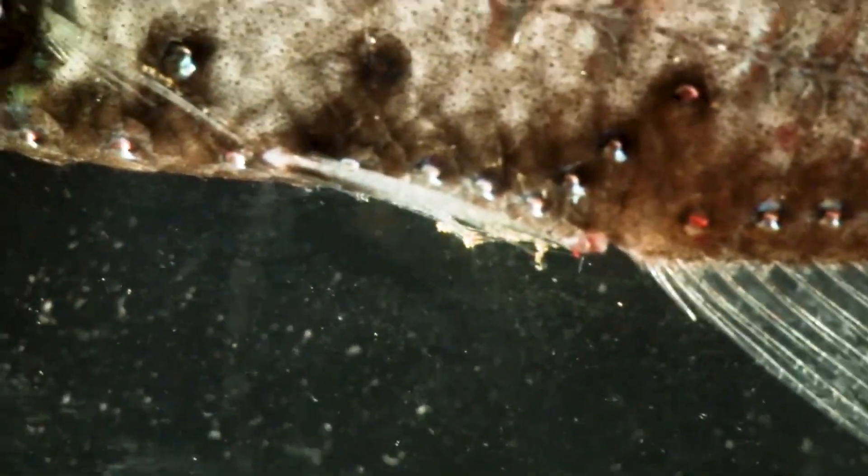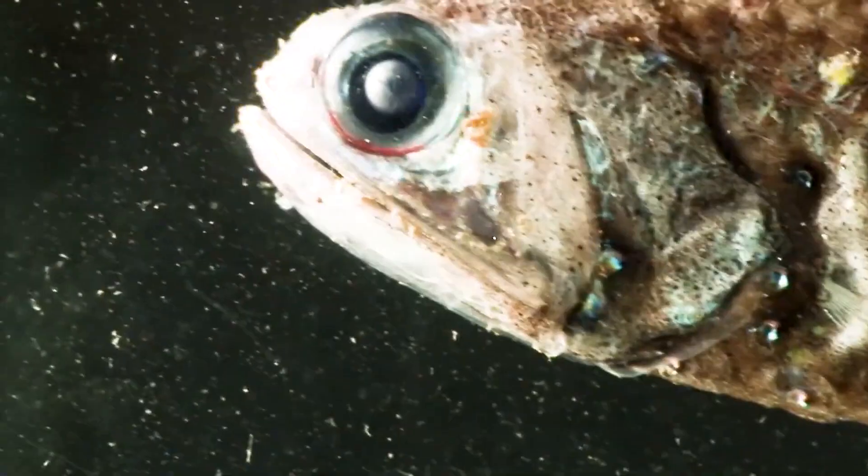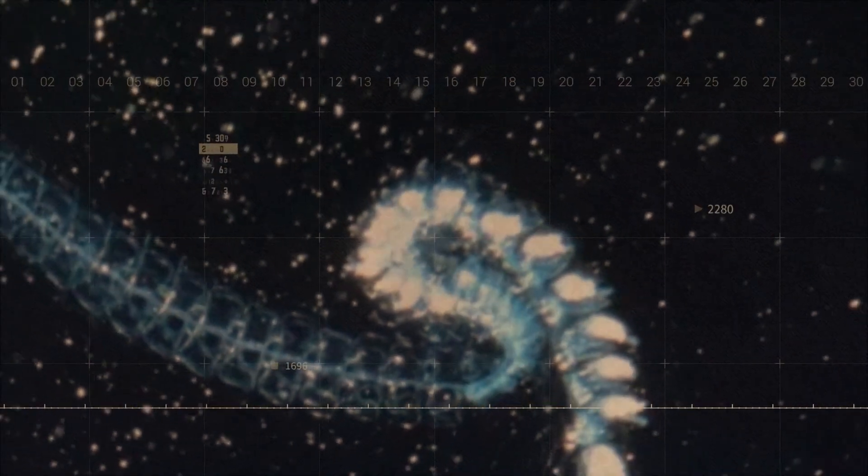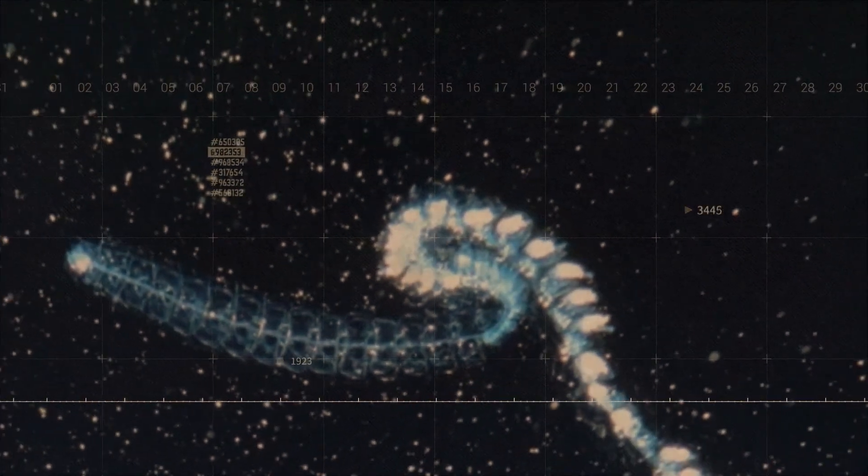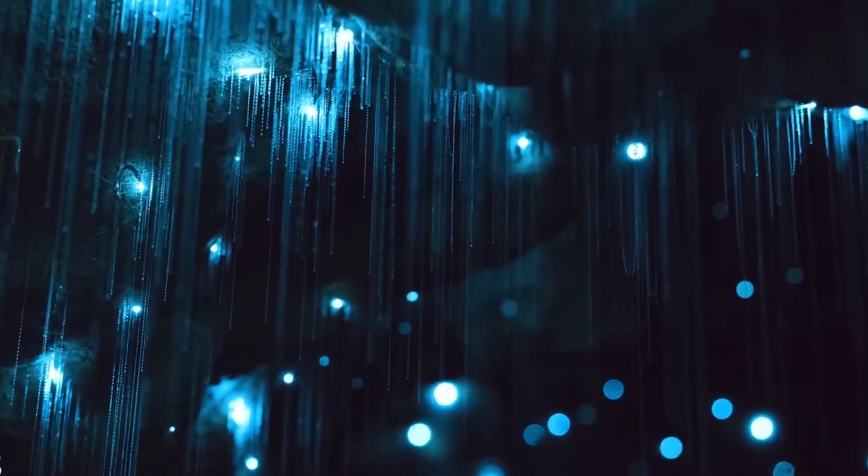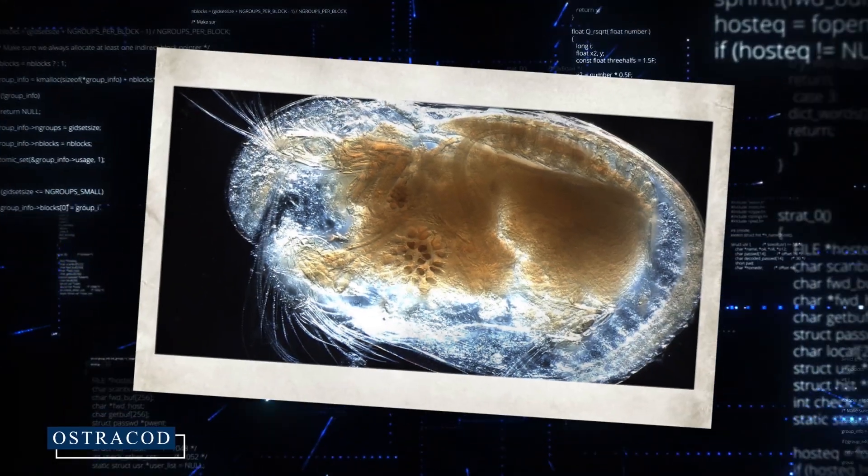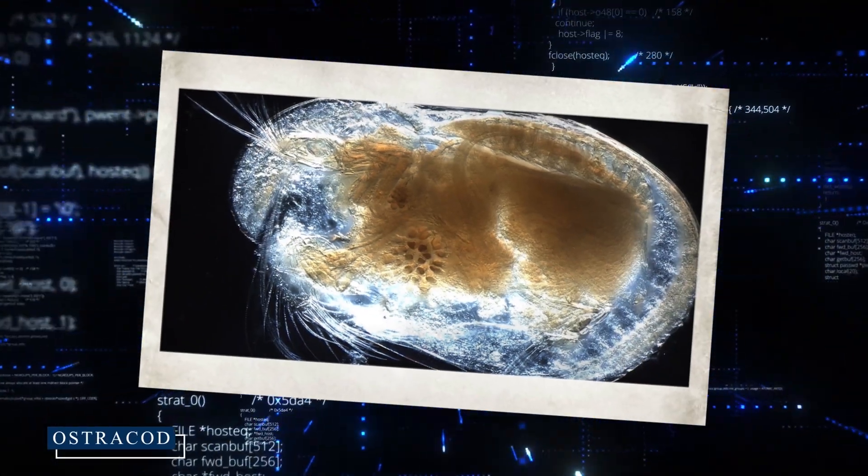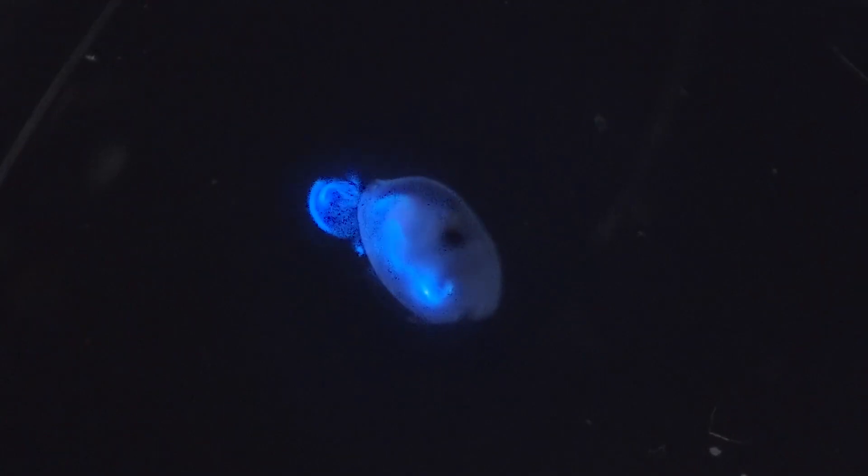When looking for a mate, they can recognize these patterns, ensuring they don't waste energy pursuing the wrong species. Some organisms take this a step further, using elaborate light displays as part of their courtship rituals. The ostracod, a tiny crustacean, is particularly famous for this. Males of certain ostracod species release clouds of bioluminescent chemicals into the water, creating a mesmerizing display of blue light.